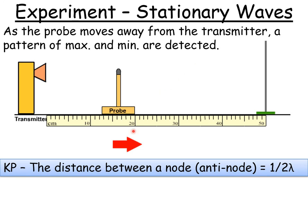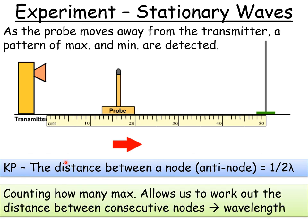So remember the key point is that the distance between a node or an anti-node is half a wavelength, and counting how many maximas or minimas allows us to work out the distance between consecutive nodes. In other words, we can work out the actual wavelength of the nodes.